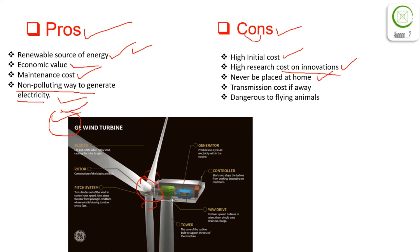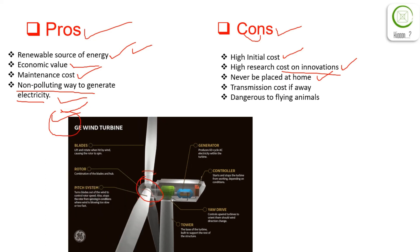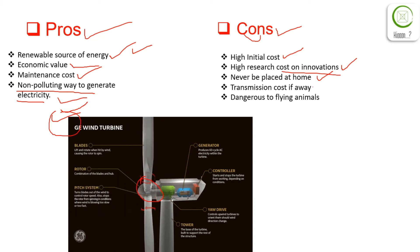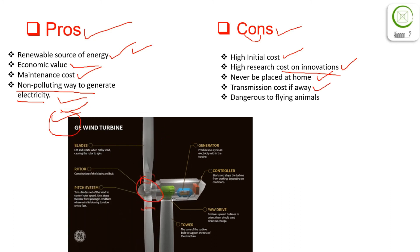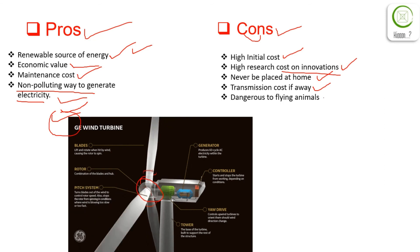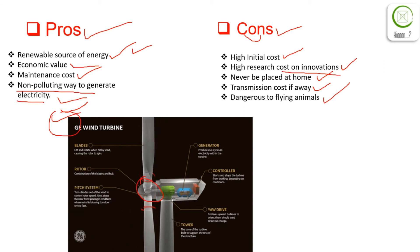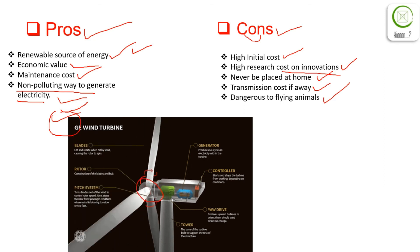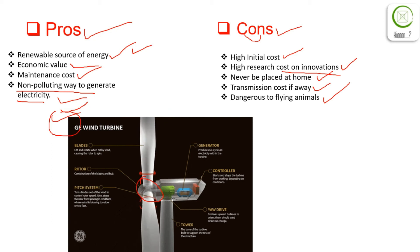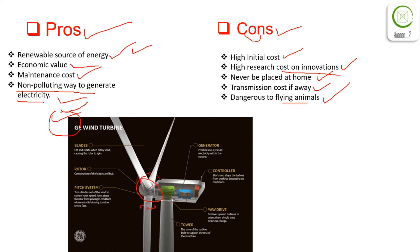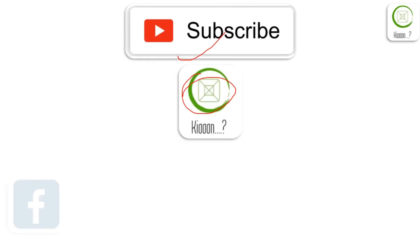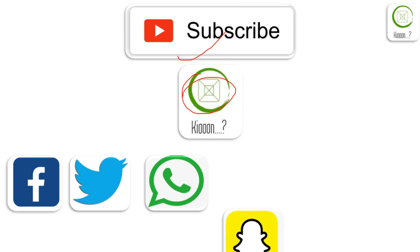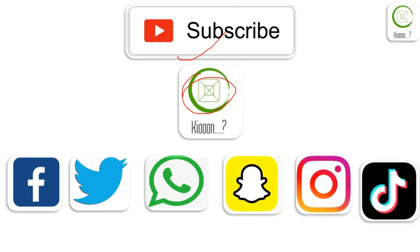The third con is that it can never be placed at home because it produces vibration which is very harmful for buildings. The fourth con is that if it is placed away from cities, it will definitely increase transmission costs. The fifth con is that it can be dangerous to wildlife, particularly flying animals which may be hit and hurt. Hope this increases your knowledge — subscribe, share this video to all social media platforms. Thank you.